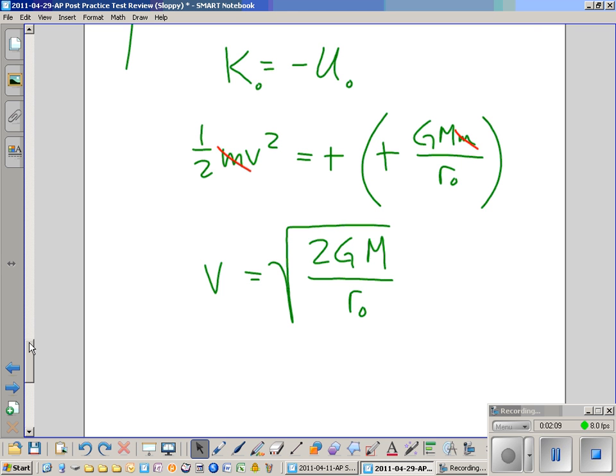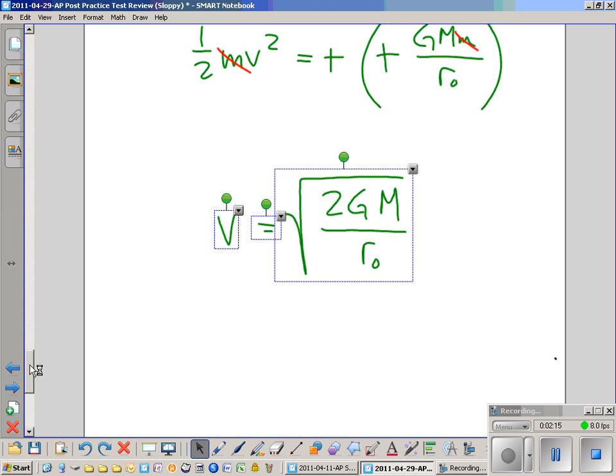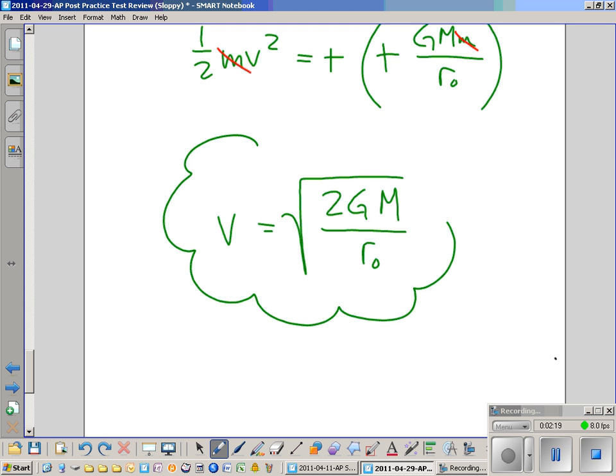So this is how we define, or this is our expression, our equation, for the escape velocity of an object at Earth's surface.